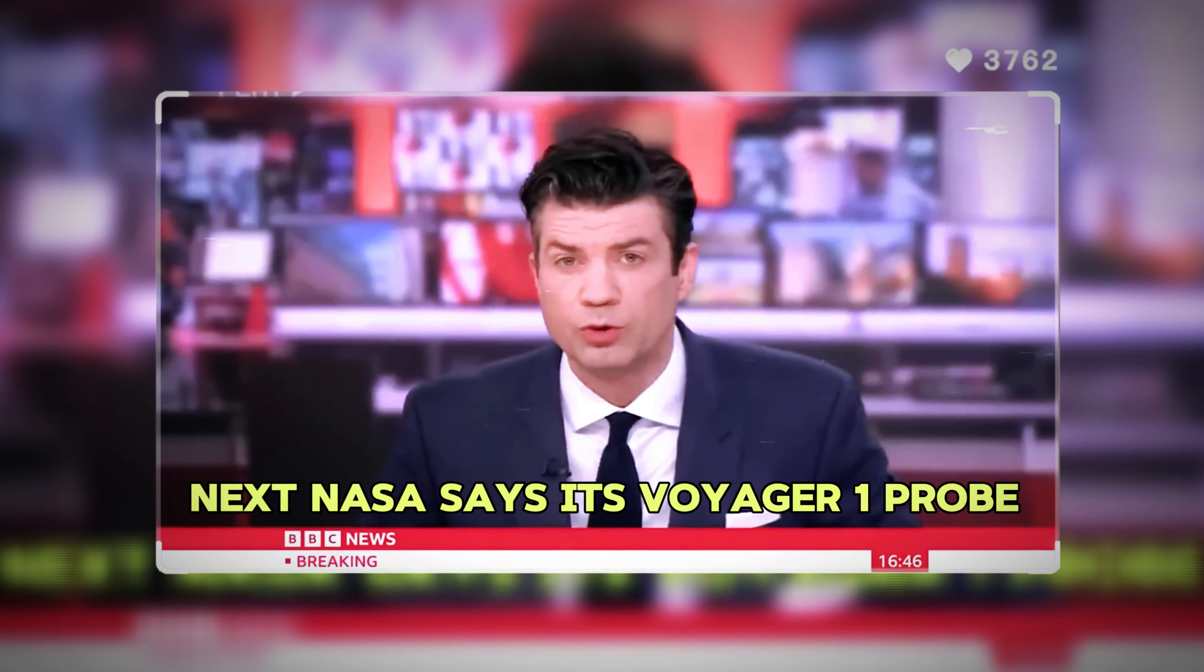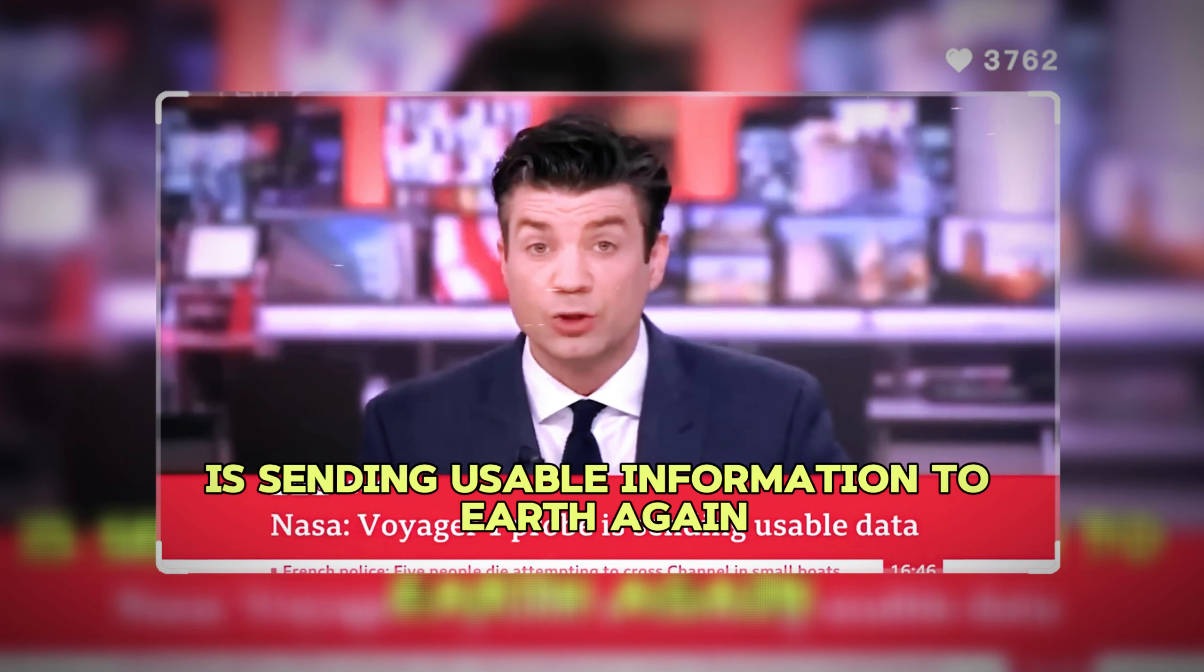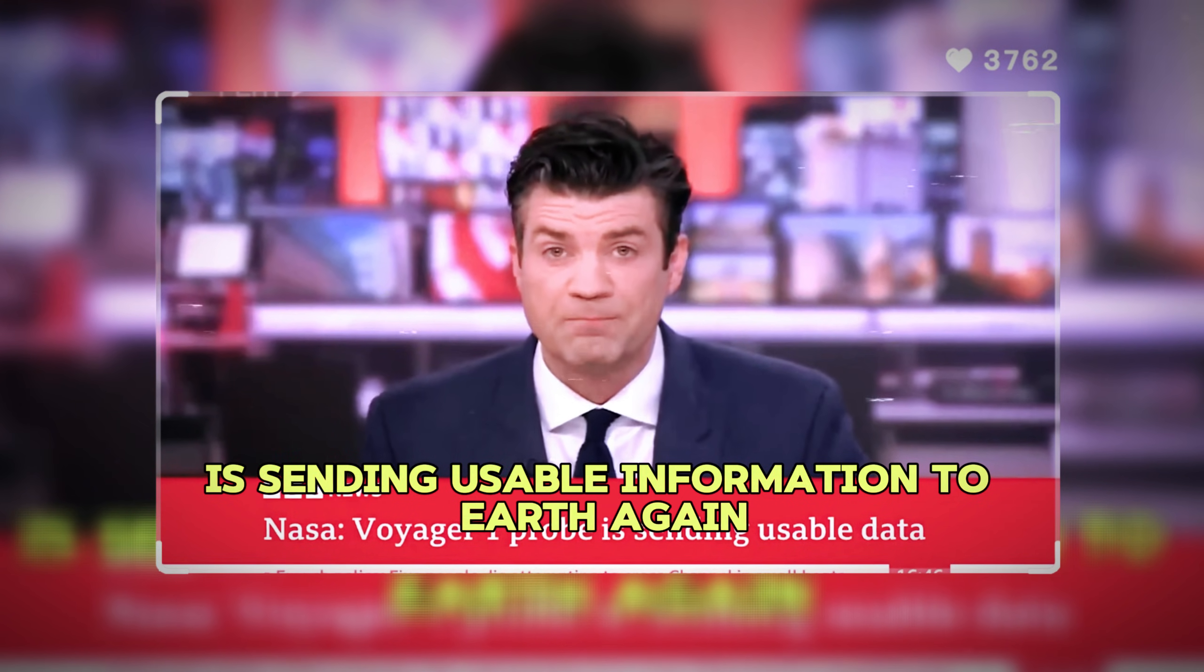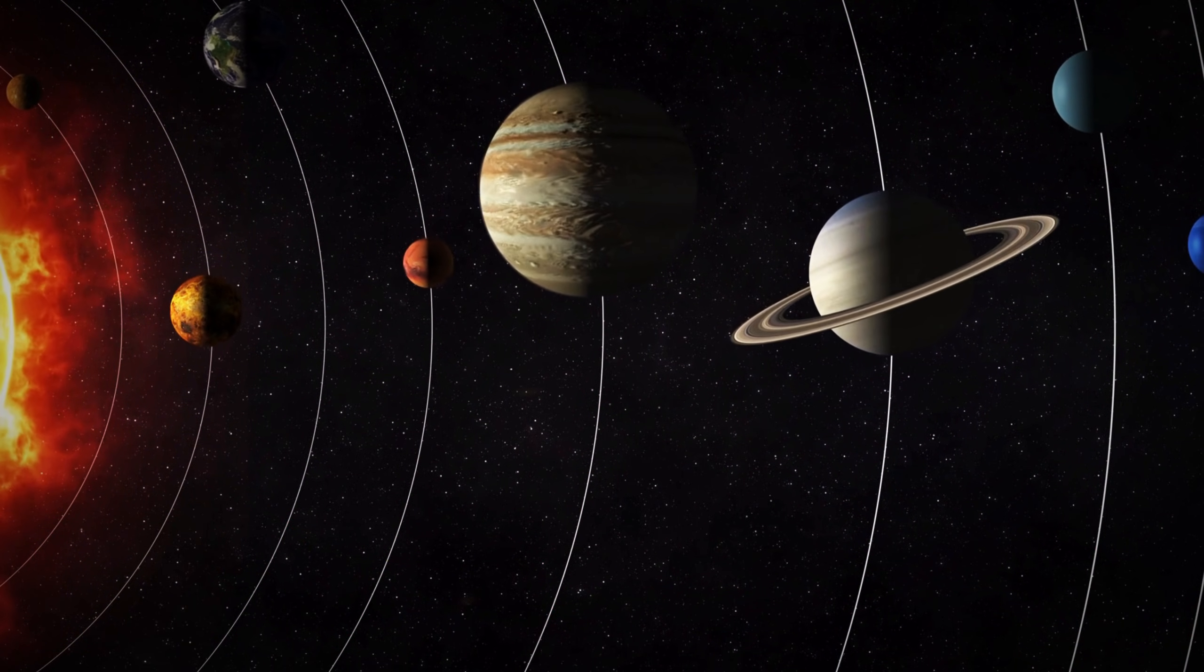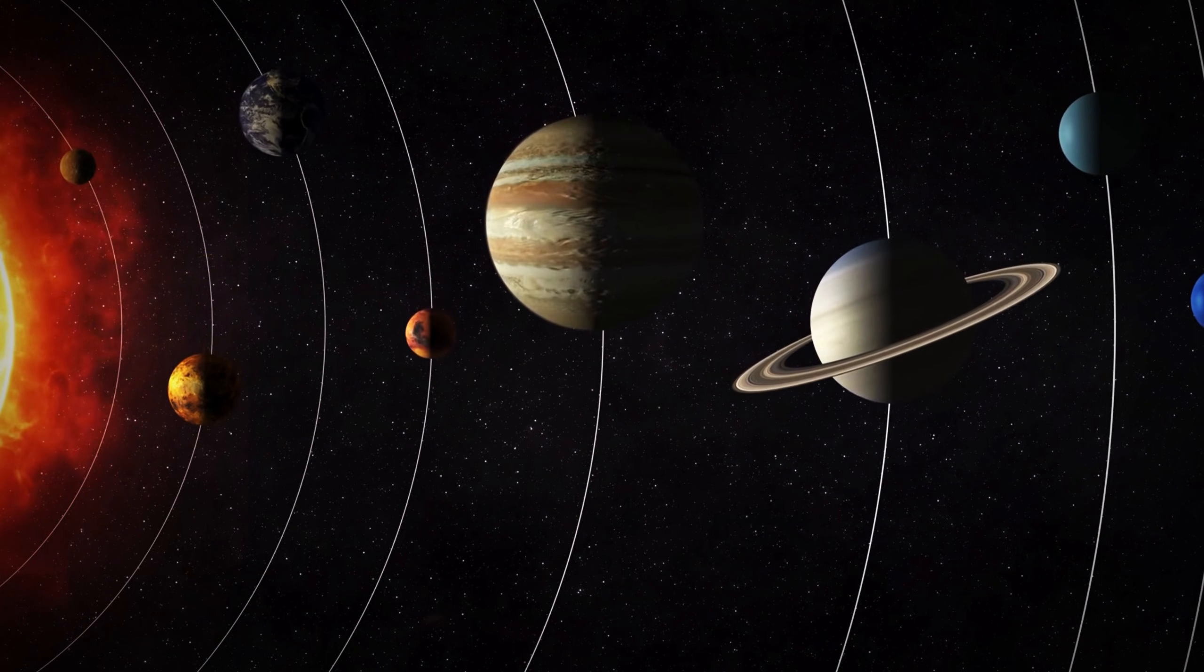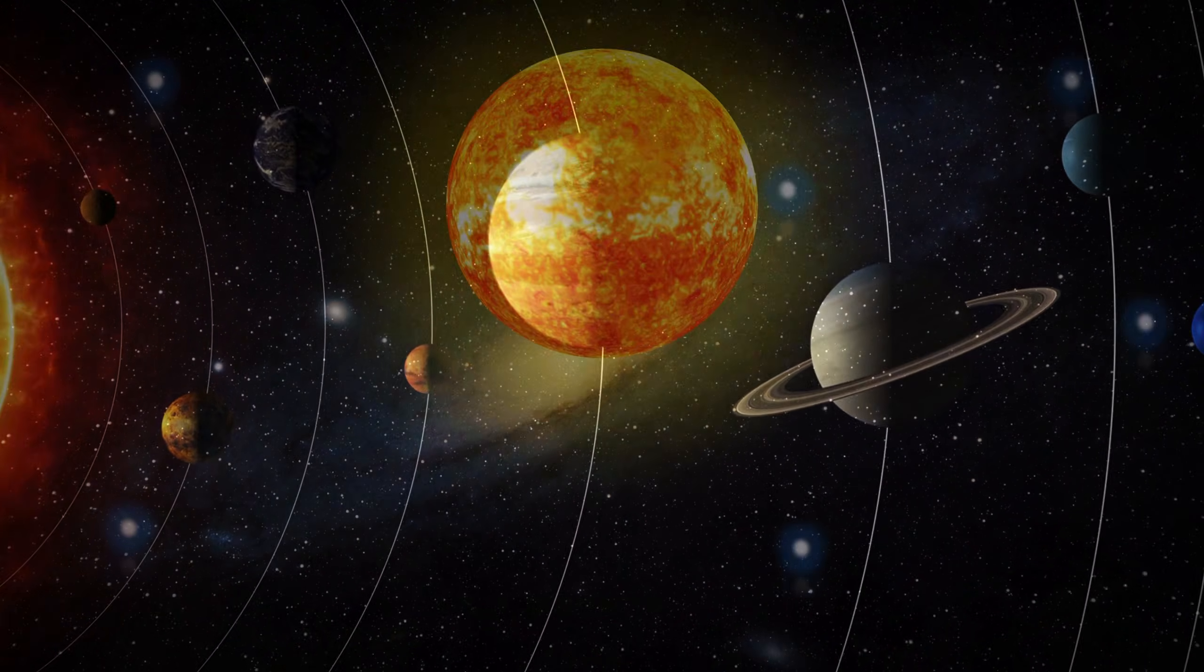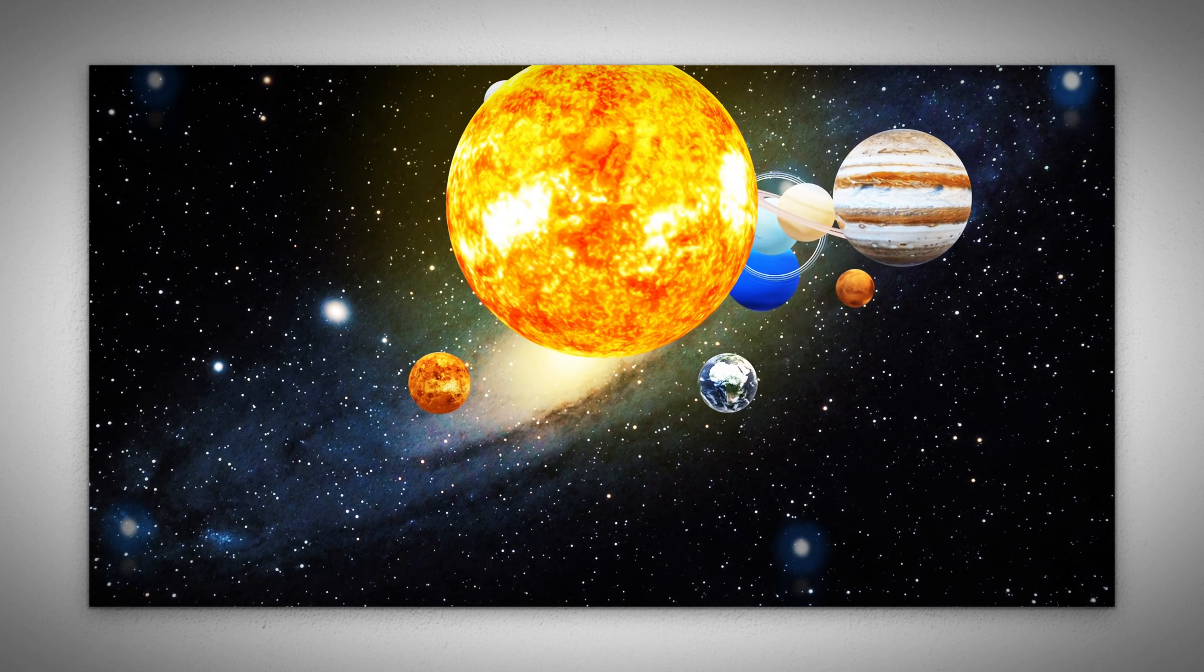NASA says its Voyager 1 probe, the most distant human-made object in the universe, is sending usable information to Earth again after months of spouting gibberish. Humanity has made incredible strides in exploring the solar system, with each new discovery leaving us more astonished. For years we thought we had identified all the planets, only to find we were mistaken.